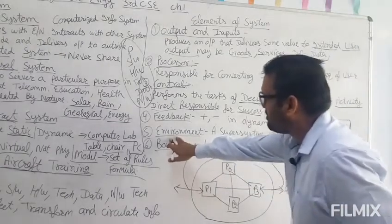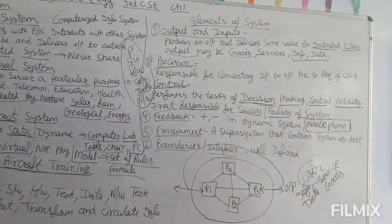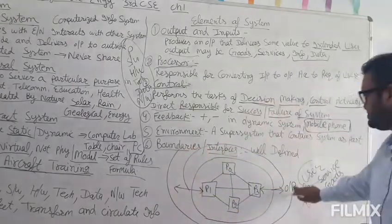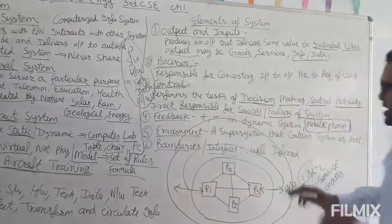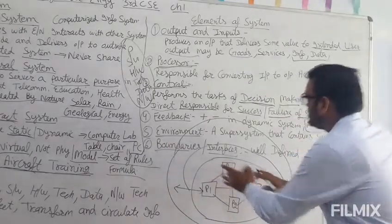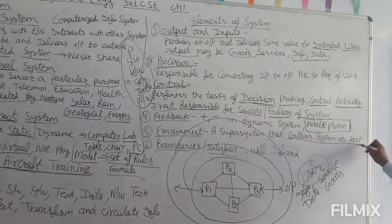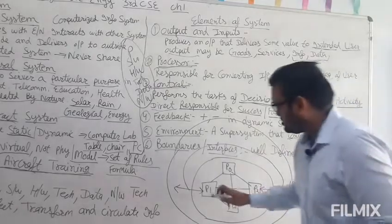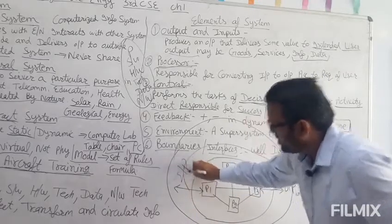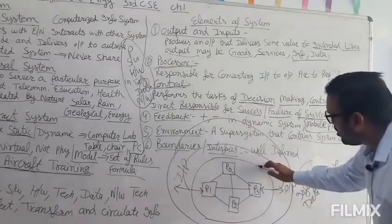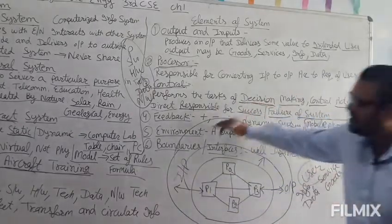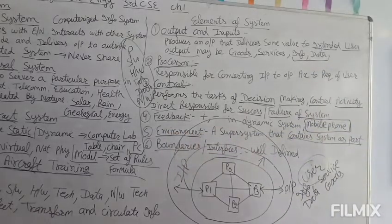Number five is environment. Environment is basically the larger system that contains the system as a part. It means all the components — system, inputs, outputs, boundaries, and interfaces — all come under the environment.